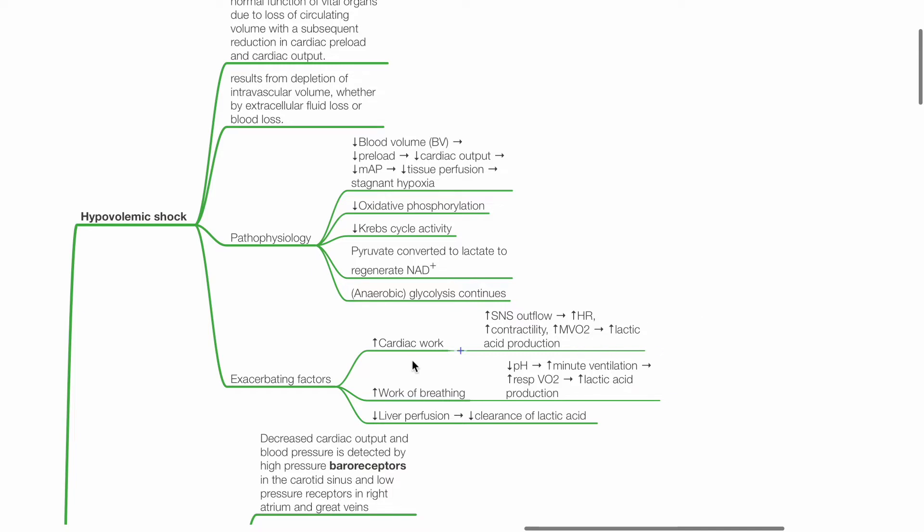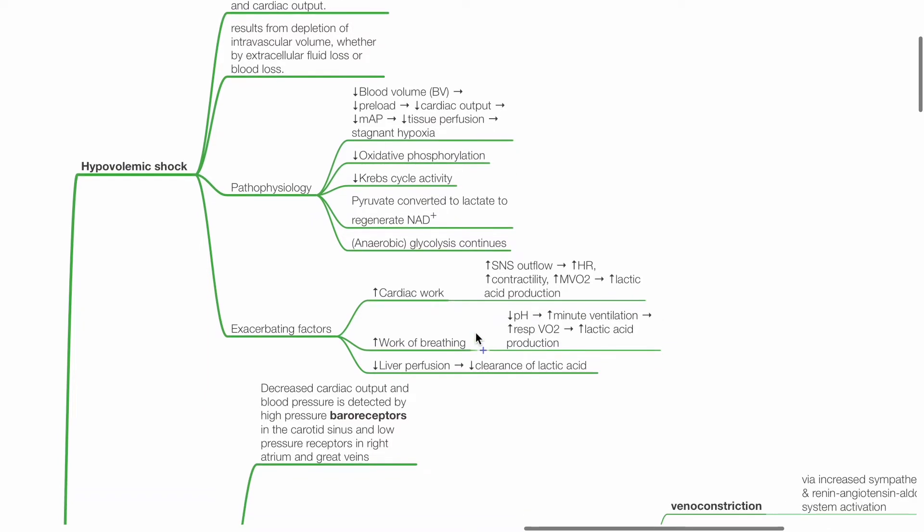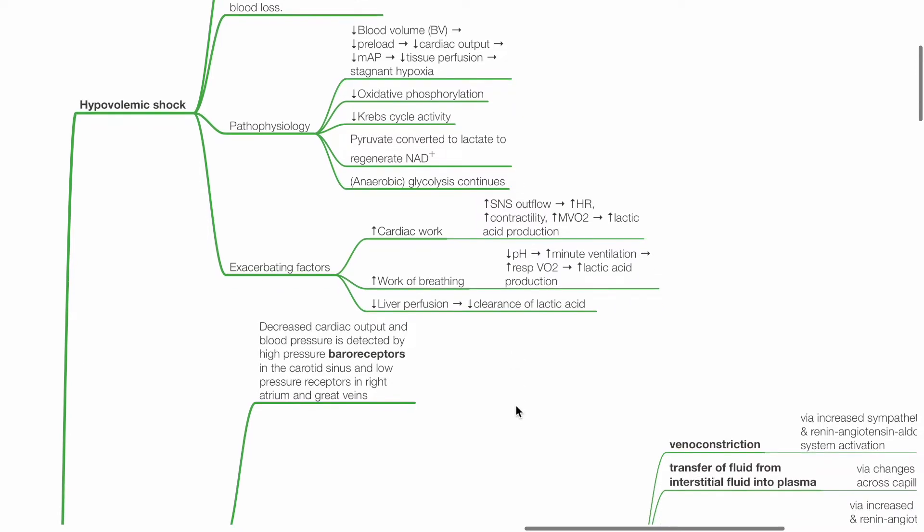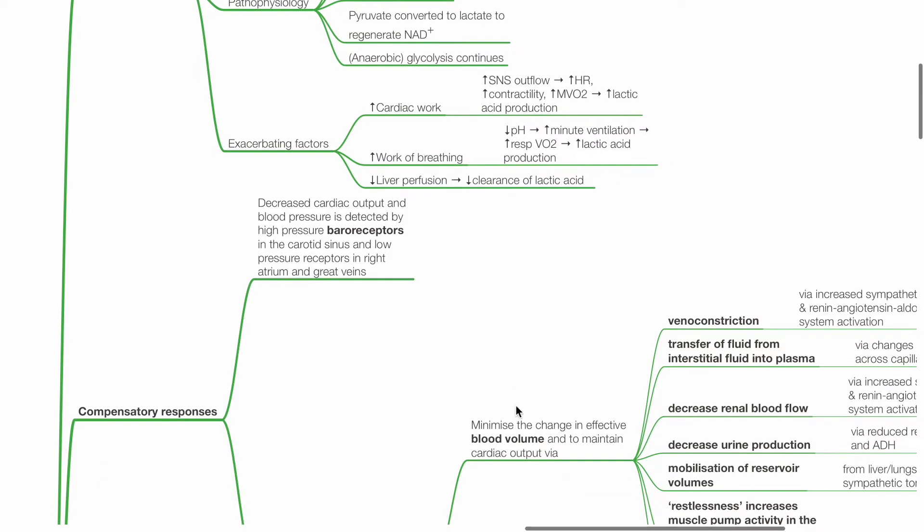Exacerbating factors include increased cardiac work such as increased sympathetic outflow resulting in increased heart rate, contractility and myocardial VO2, which increases lactic acid production. Increased work of breathing—acidosis increases minute ventilation which increases respiratory VO2 and lactic acid production. Reduced liver perfusion reduces the clearance of lactic acid.